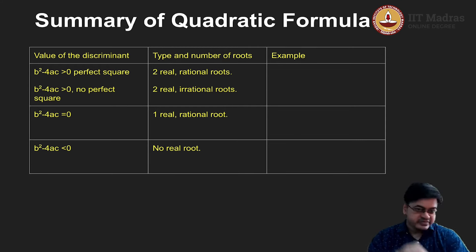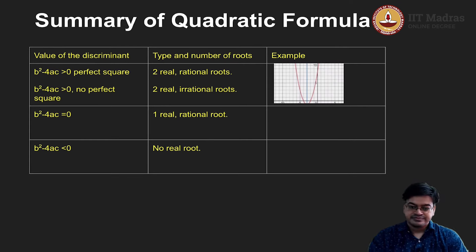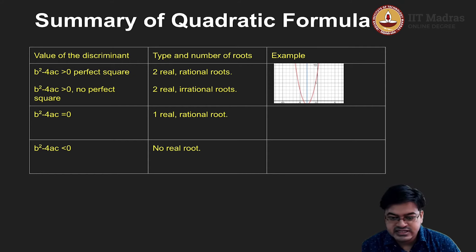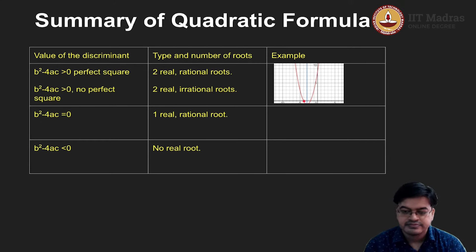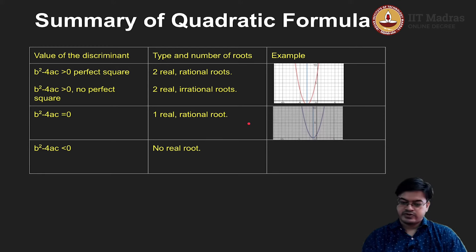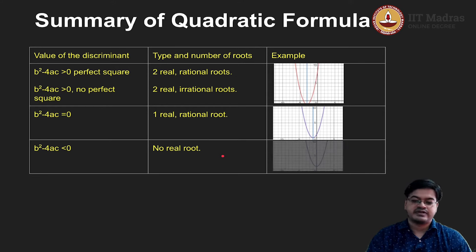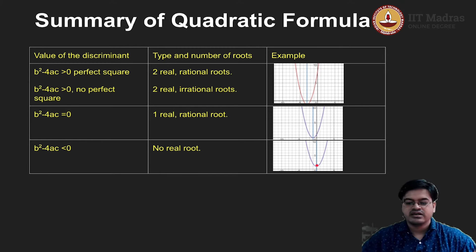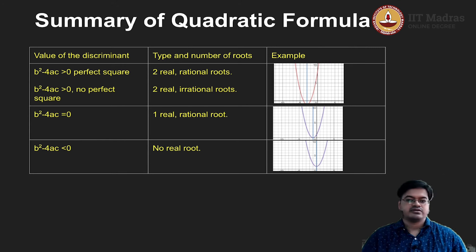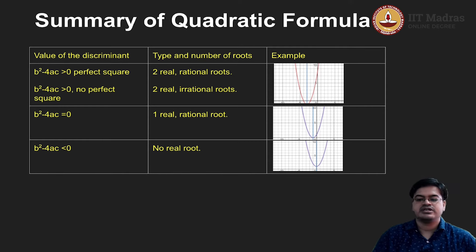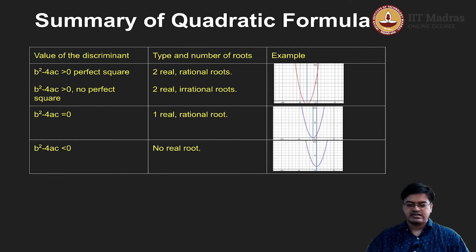Let us demonstrate this through graphs. Here is the example where b squared minus 4ac is greater than 0 — these are the two roots of the quadratic equation. When b squared minus 4ac equals 0, there is only one repeated root. And if b squared minus 4ac is less than 0 — our example was x squared plus 1 — the parabola never touches the x-axis, confirming no real roots.